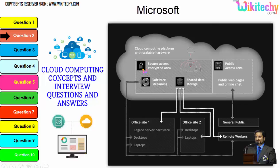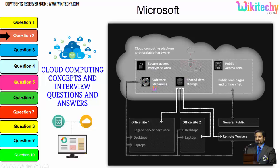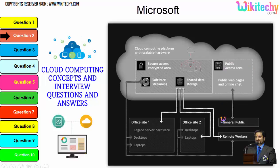Cloud computing provides a public access area with public web pages for end users. There is also secure data access, shared data storage, and software streaming. Companies can use it as a private environment, and the public can use it to access web pages or websites. This is how cloud computing works in practice.